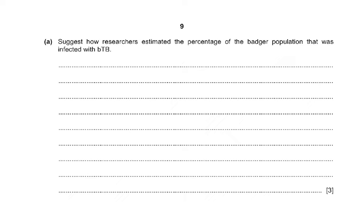The question asks: suggest how researchers estimated the percentage of the badger population that was infected with BTB — three marks. You capture a large sample from one or more areas, record the number caught, then count the number infected. Then use the formula: number infected divided by total number, multiplied by 100. Alternatively, you could use the mark-release-recapture method and the Lincoln index.